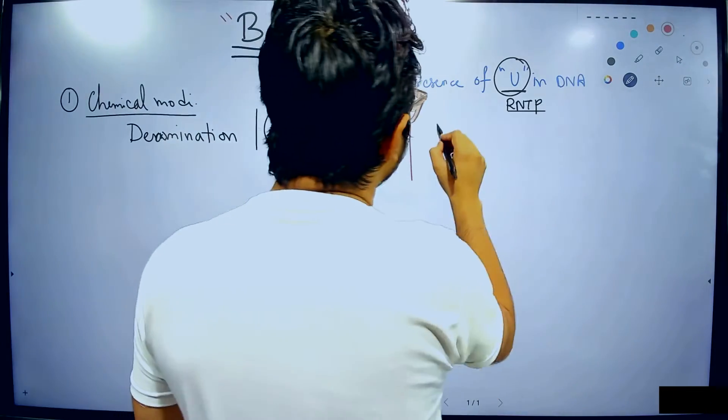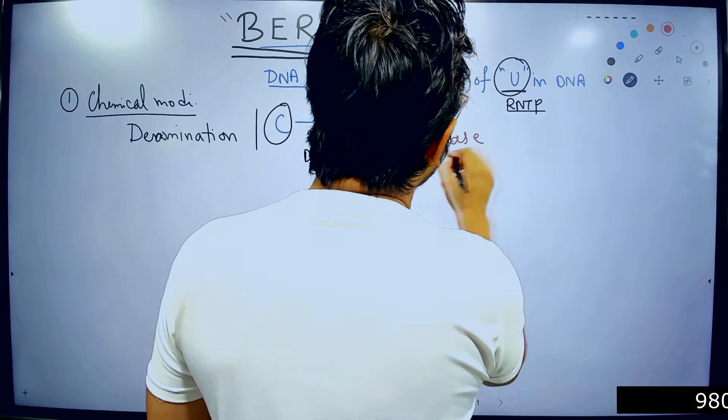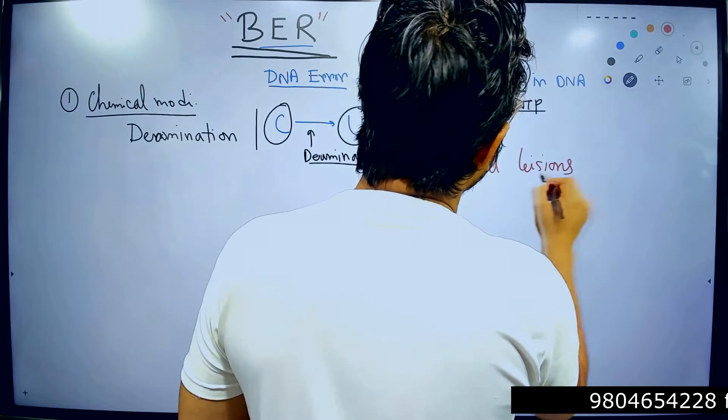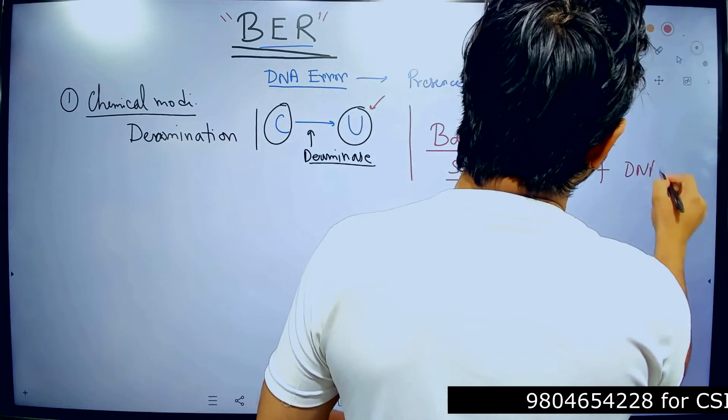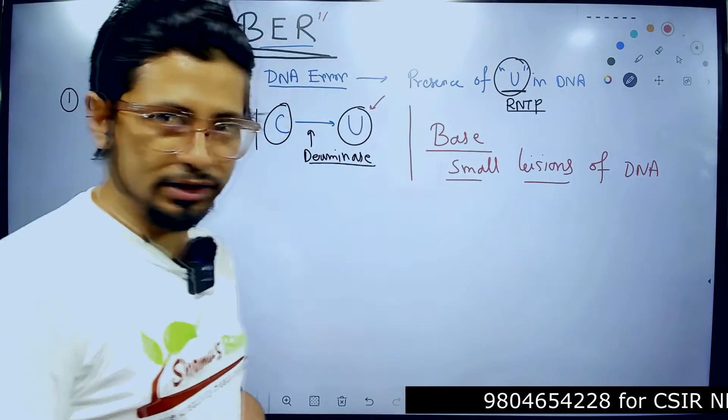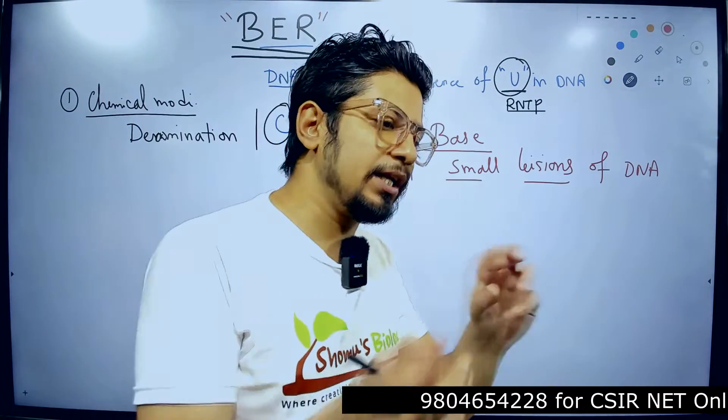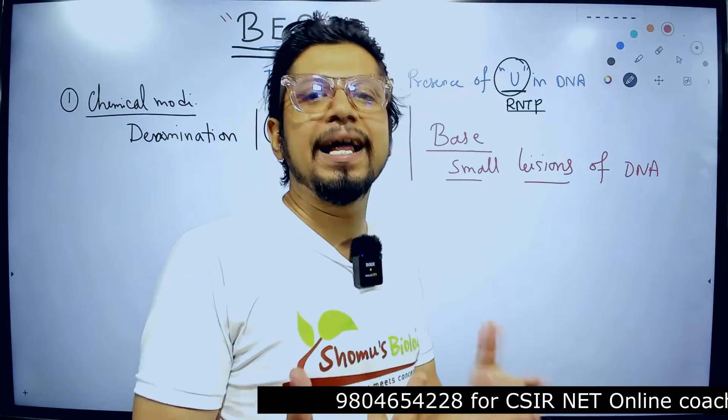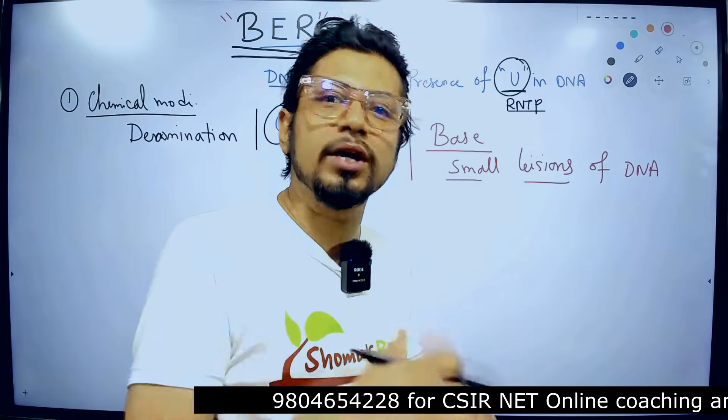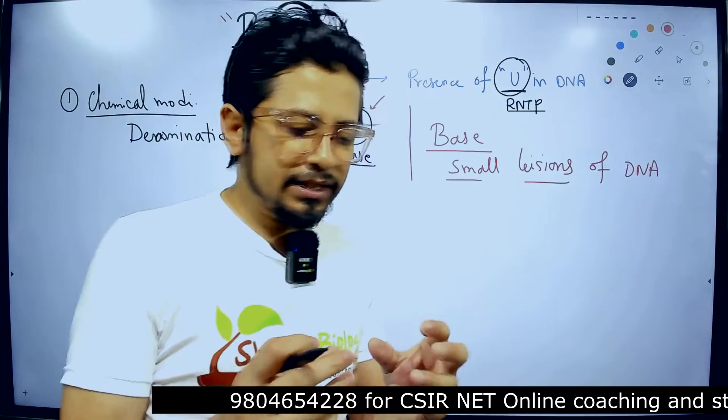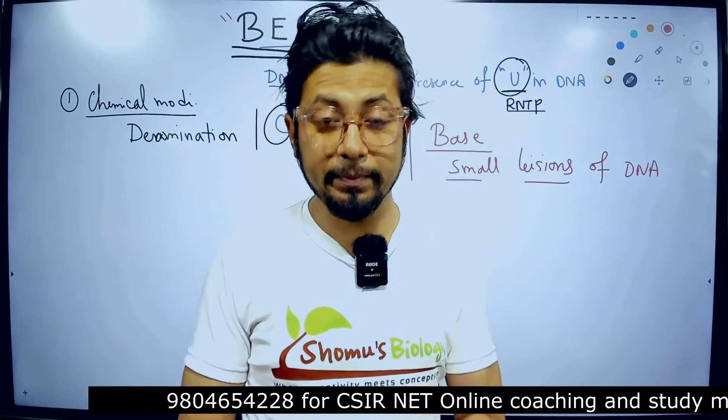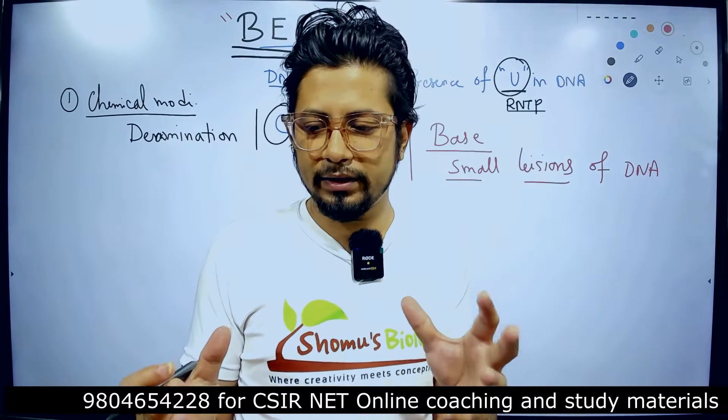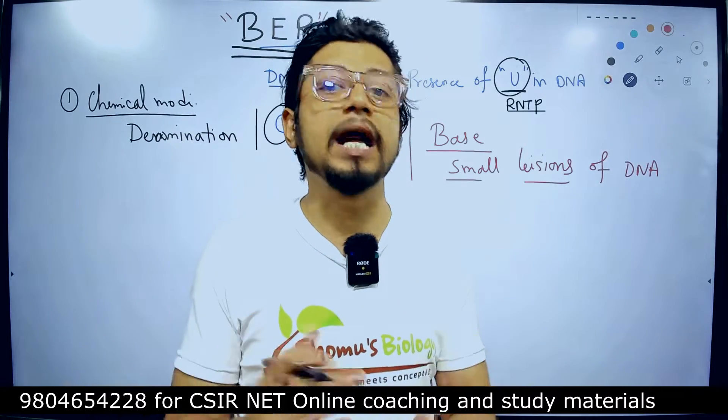Now the base excision repair fixes only small lesions in the DNA, small lesions of the DNA. Such small lesions which generally do not change the spirality of the DNA or the spiral structure of the DNA. Now the lesions are small, they will not impact the structure of the DNA.